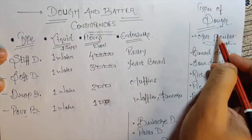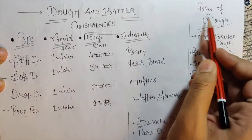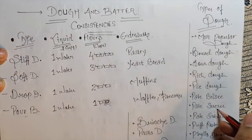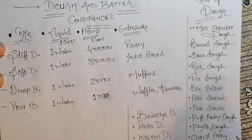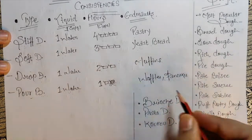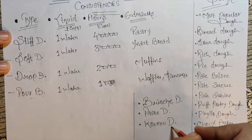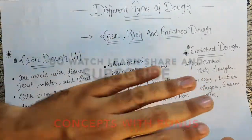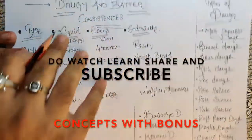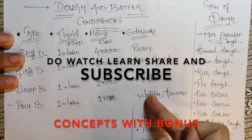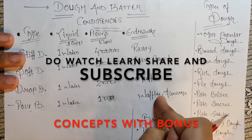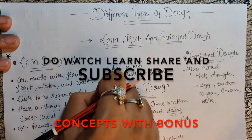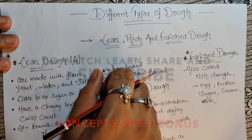Here are the types of dough — the most popular ones: bread dough, sourdough, rich dough, pie dough, pâte brisée, pâte sucrée, pâte sablée, puff pastry dough, phyllo dough, choux dough, croissant dough, brioche dough, pasta dough, and crêpe dough. We can figure out which falls under lean dough, rich dough, or enriched dough. Keep in mind the consistency — stiff, soft, drop, or pouring — to get your desired end result. I hope you're clear with this. See you in the next informative video, bye bye!